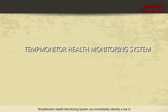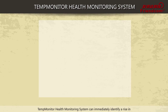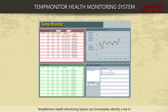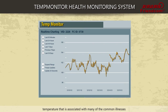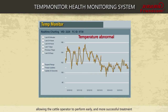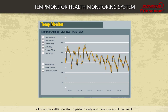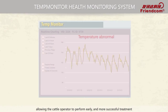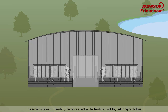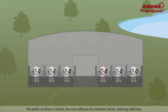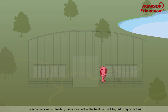Temp Monitor Health Monitoring System can immediately identify a rise in temperature that is associated with many common illnesses, allowing the cattle operator to perform early and more successful treatment. The earlier an illness is treated, the more effective the treatment will be, reducing cattle loss.